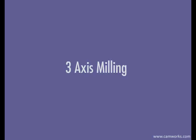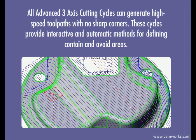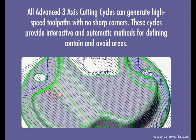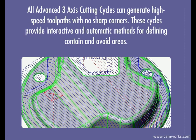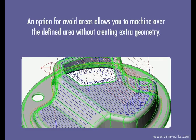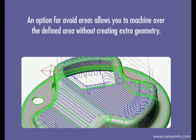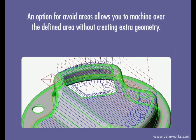Three-axis milling. All advanced three-axis cutting cycles can generate high-speed tool paths with no sharp corners. These cycles provide interactive and automatic methods for defining contain and avoid areas. An option for avoid areas allows you to machine over the defined area without creating extra geometry.